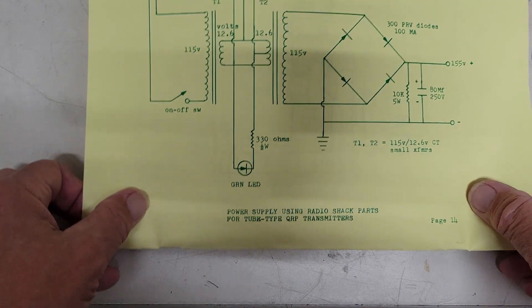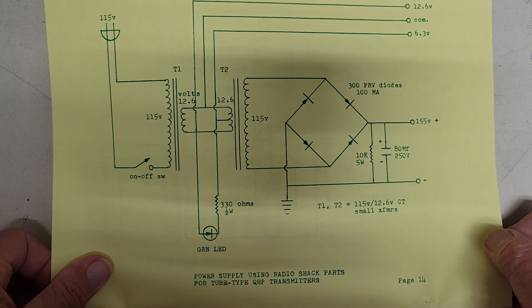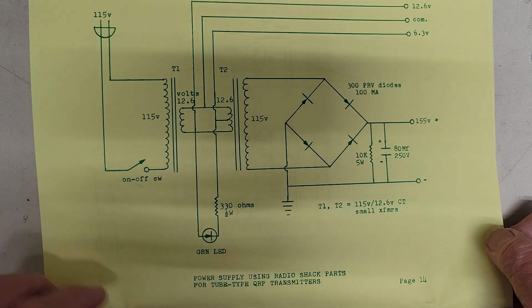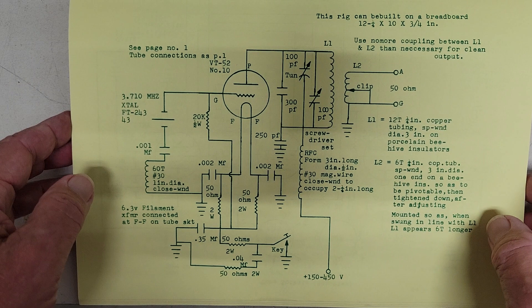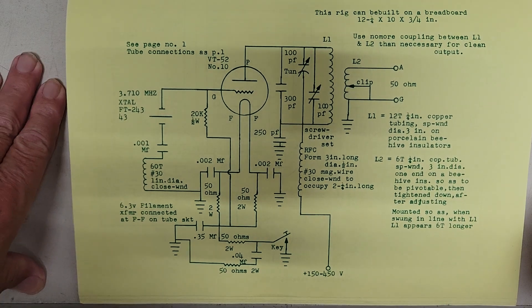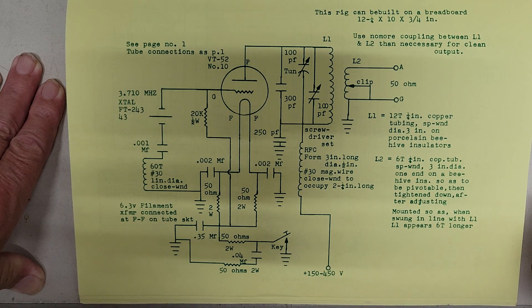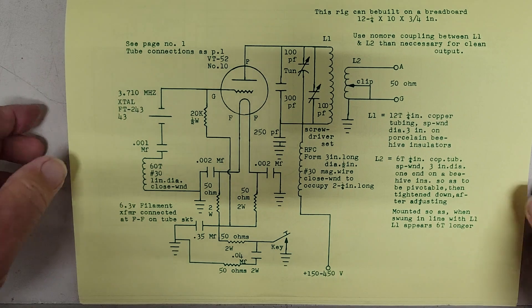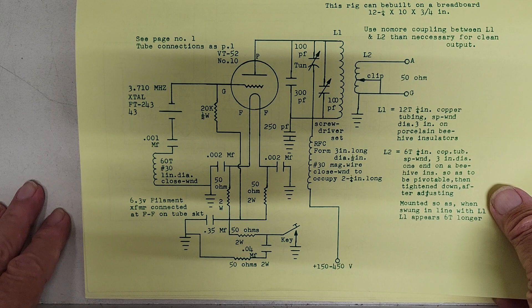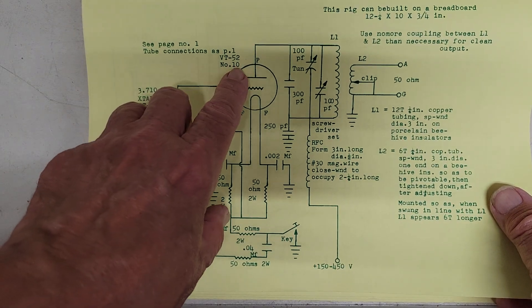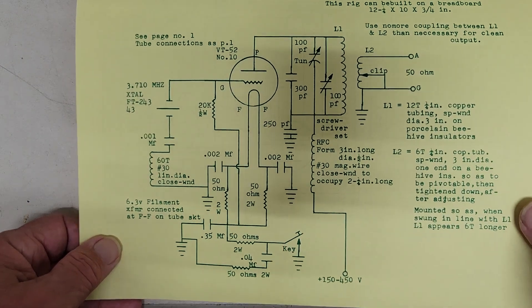Here we have solid state rectifiers and a little power supply using Radio Shack parts. All right, this is a plan that was in 1930s QST 1929 and the handbook in 1930 that he modified. It's an 80 meter transmitter using a VT 52 or a number 10 tube again. Some details on how to wind the coils.